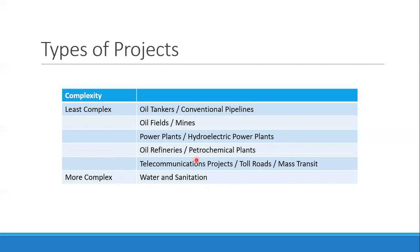Some of the most complex types of project financing are telecom projects, toll roads, mass transit, and water and sanitation projects. The main reason is that the output of these projects is usually not sold to just one customer — it's sold to the public. For toll roads, revenue comes from the number of vehicles using the road. There is one risk very prevalent in telecoms and water: demand risk.